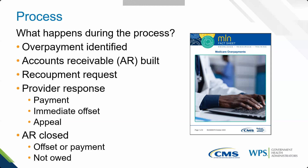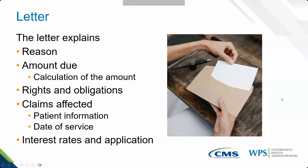We do have to send you a letter explaining the reasons — you can't just be told you owe money without being told why. The letter must tell you which claims are affected, the total amount due, how we calculated that amount, and your rights and obligations as they relate to Medicare. It will explain whether you can appeal, when it has to be paid, and all relevant details. We must also identify which patients are affected and the services for those patients.